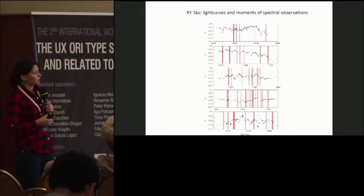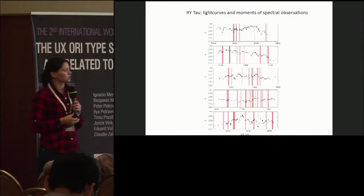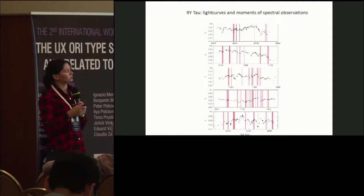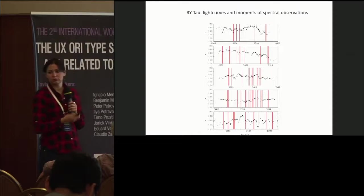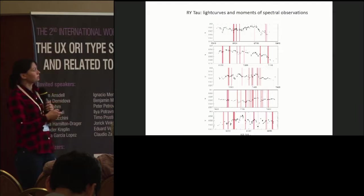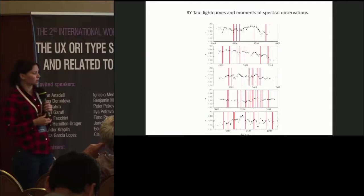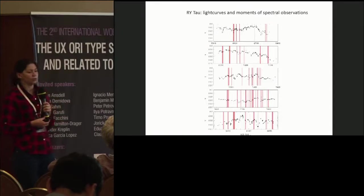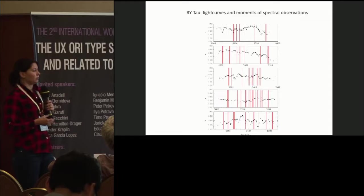Here you can see the examples of light curves. Each panel one year, one season. And red lines shows the moments of spectral observations. So, you can see that variability is not periodic.